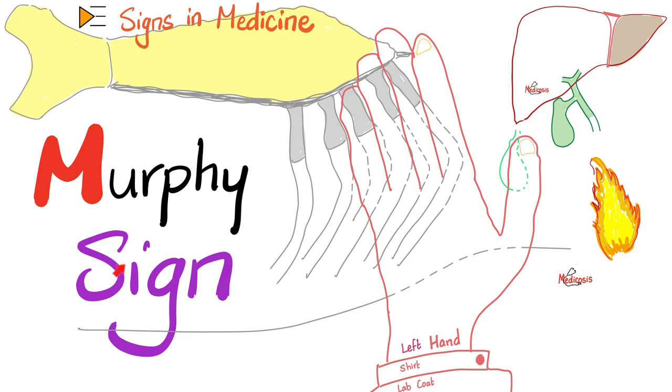Today, it's time to talk about Murphy sign. We use this to diagnose cholecystitis — when your gallbladder is on fire.